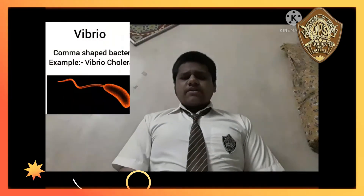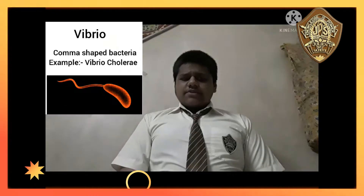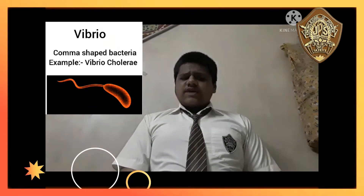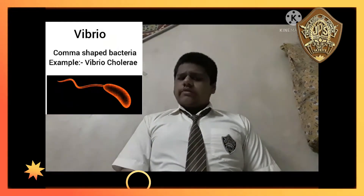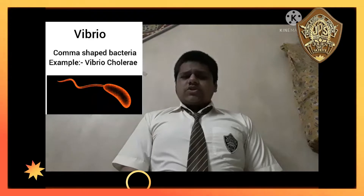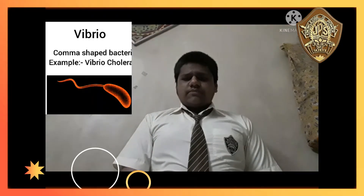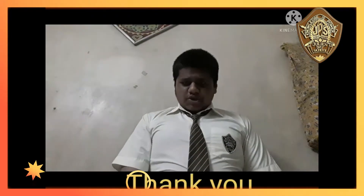The last type of bacteria is Vibrio. They are comma-shaped bacteria. For example, Vibrio cholerae, which causes cholera in the human body. Thank you.